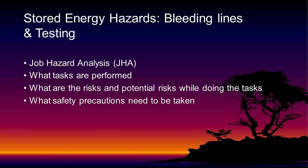We also want to include a job hazard analysis or job safety analysis. All a JHA or JSA is, is a piece of paper with three columns: what the task is, what the risks or potential hazards are in the middle column, and in the last column, what we're going to do safety-wise to protect ourselves from those hazards. It's a pretty simple, straightforward document to make.